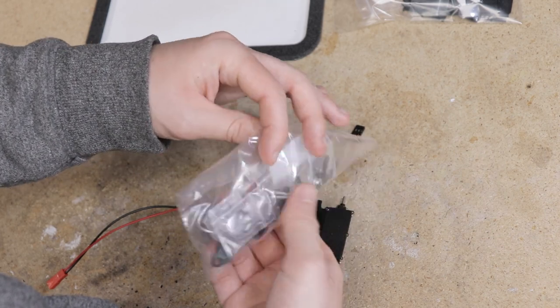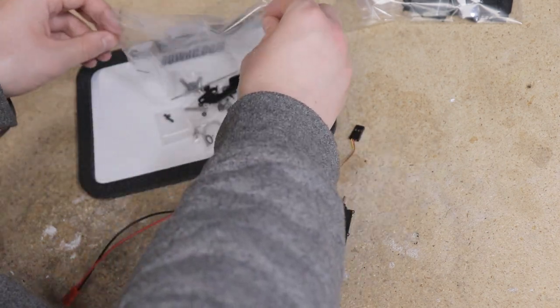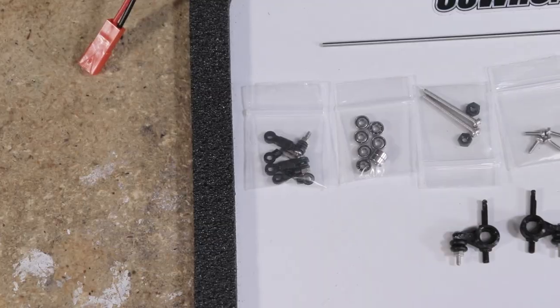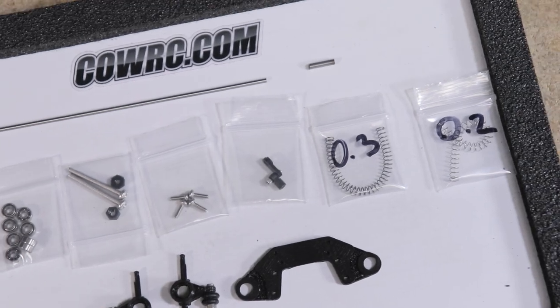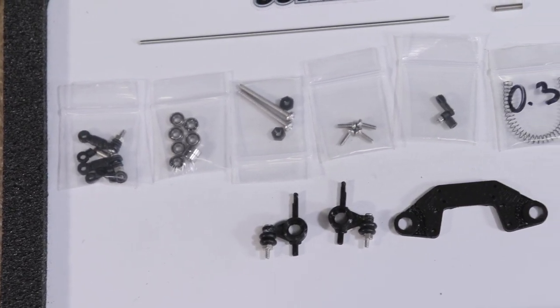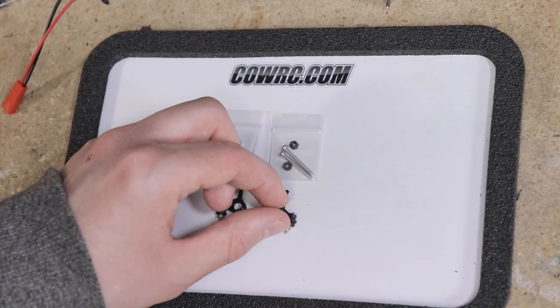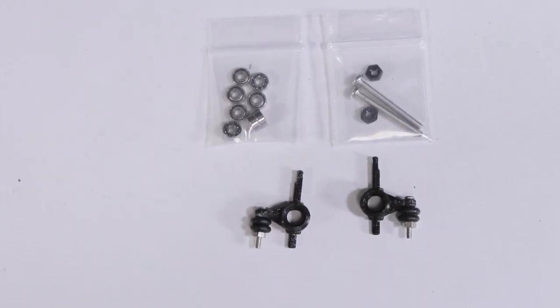Bag 4 contains the parts we'll use to build the modular FF01 front suspension, and steering assembly. As you may notice, unlike with prior kits, quite a bit has already been pre-glued and pre-assembled, which will cut down on the time it takes to build this assembly and you won't have as many tiny parts to keep track of. We'll start by assembling the steering knuckles using the parts that you see here.